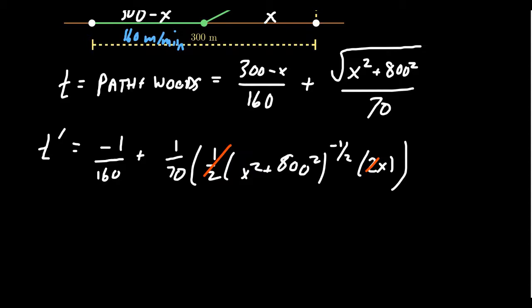And we get 0 equals—I'm sorry, not equals—that should be plus x sits above 70 times the square root of x² + 800². I mean you'll see this calculation is almost the same thing.